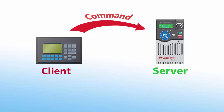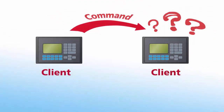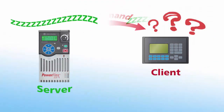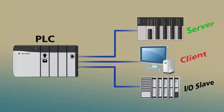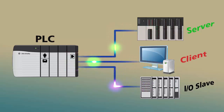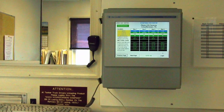Clients are devices that initiate communications and servers respond. Clients cannot talk directly to other clients, and servers don't talk to other servers. It's possible for a PLC to act as a client, a server, as well as an I/O messaging master simultaneously on the same network, communicating with various server devices and clients while controlling remote I/O devices as applications demand. I/O message communications are given higher priority by the processor, while client-server data messaging is given lower priority.